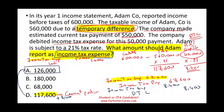Be careful whether the difference is temporary or permanent. If it's permanent, there's no deferred tax asset or liability. If it's temporary, you must determine whether you have a deferred tax asset or liability. Also be careful whether you're being asked for the current portion, the long-term portion, or the total. Here, the current portion is $117,600 and the long-term portion is $8,400.